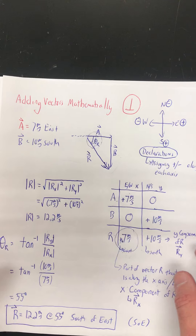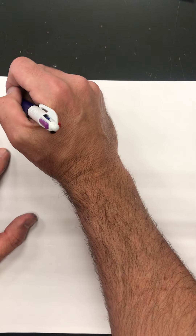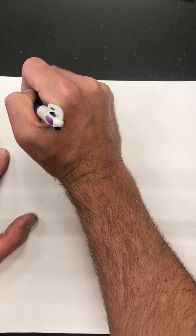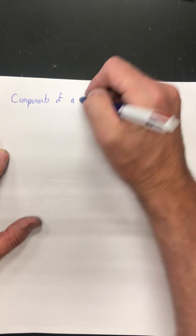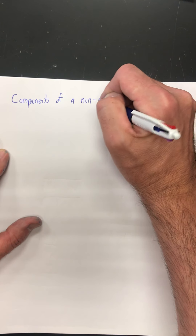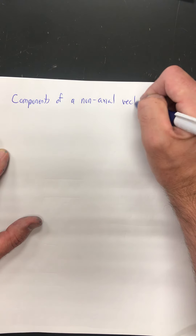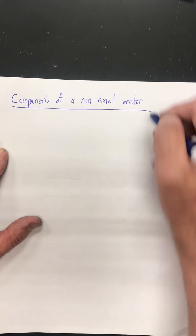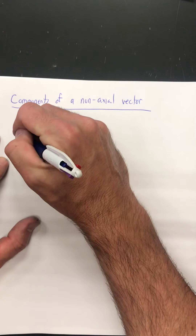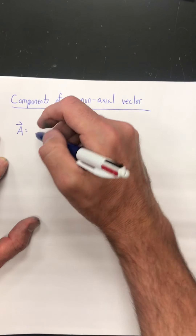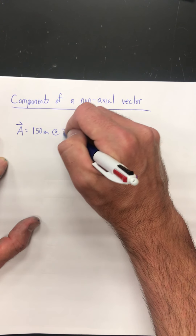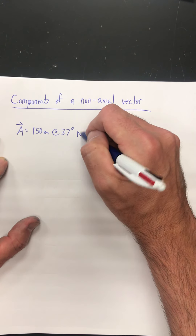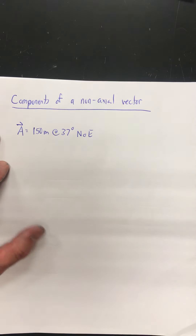Now the next thing I want to talk about in this video goes a little more into the idea of components of a non-axial vector. What happens if vector A was, say, 150 meters at 37 degrees north of east?